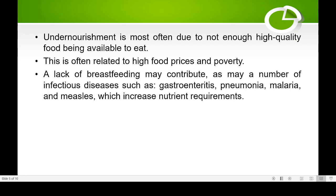Under-nutrition is often due to not having enough high-quality food. For example, in Kerala families we eat enough rice, but rice only gives carbohydrate. A person eating only rice may look fat or obese but still be under-nourished. Eating rice alone without enough fish or vegetables leads to deficiency of vitamins and minerals. This is also a form of under-nourishment, often related to high food prices or poverty.